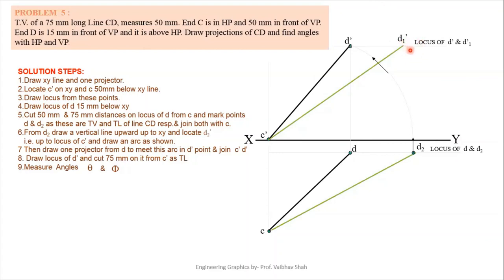Take the true length on a rounder, put at C', and cut the locus of D' — giving D1'. This true length line C'D1' is the true length in the front view direction. If we measure the angle at C', it gives alpha from front view and theta from true length. Measuring the true length angle with the XY gives Theta. The angle of CD (without-dash plan line) gives beta. Find alpha, beta, theta and phi — these are the required answers.